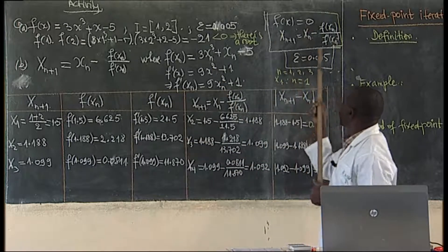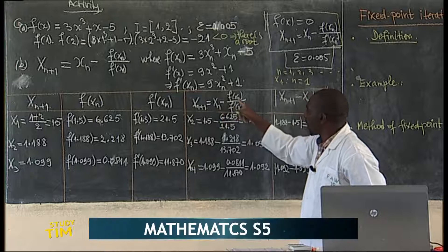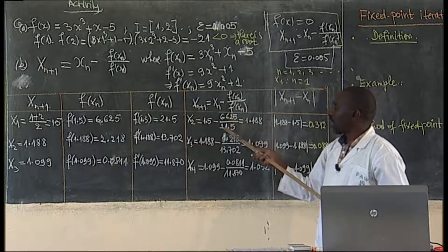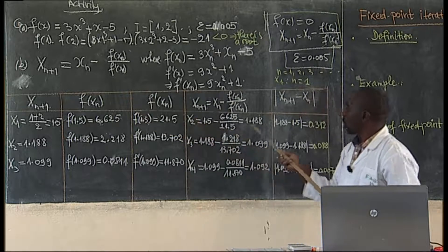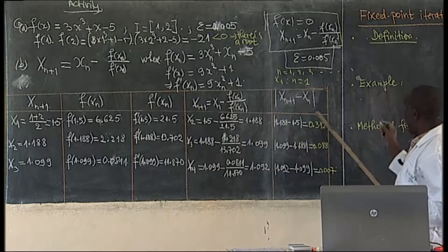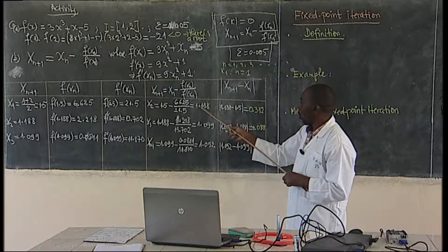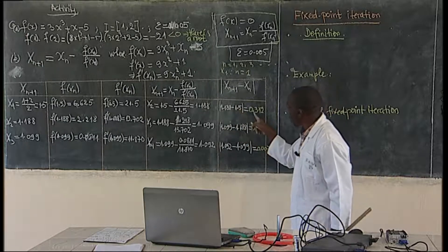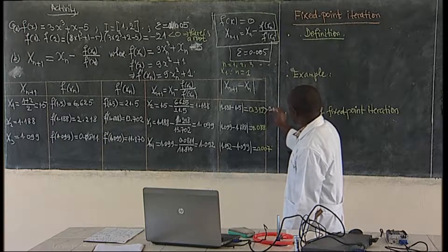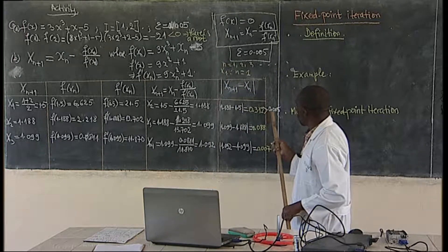Then in the formula, x(2) = x(1) - f(x(1)) / f'(x(1)). As f(x(1)) is 6.625 divided by f'(1.5) which is 21.5, the calculation will give you x(2) = 1.188. The difference |x(2) - x(1)| = |1.188 - 1.5| = 0.312. This is greater than 0.005, the tolerance limit, so you have to continue.